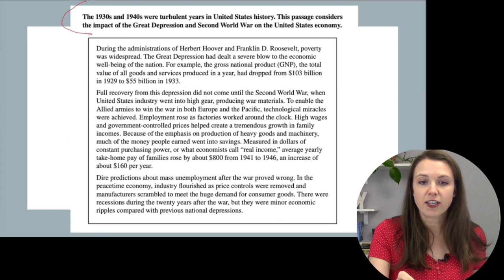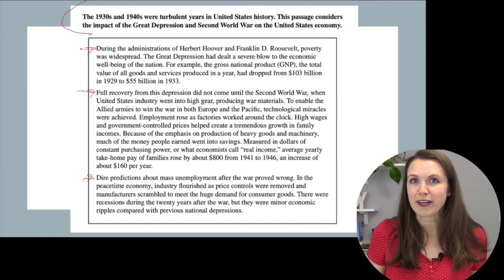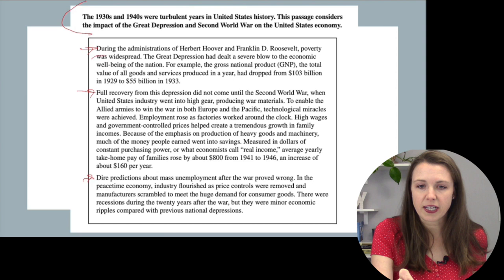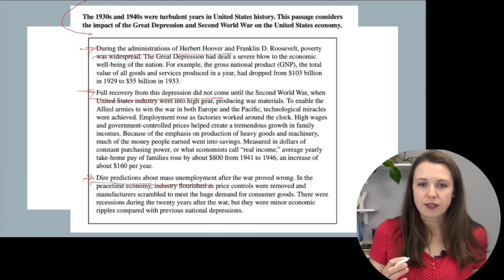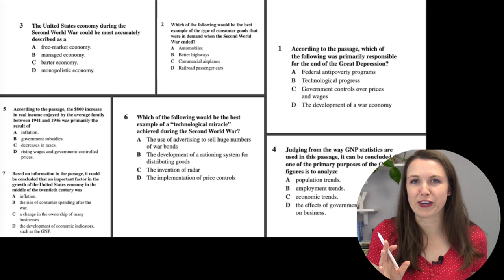Here's our first article. I'm going to survey by reading the first part and just about half a line of each paragraph. The title section says: 'The 1930s and '40s were turbulent years in the United States. This passage considers the impact of the Great Depression and Second World War on the United States economy.' Quickly reading just the first half-line of each paragraph gives us a general idea of what's going on — full recovery from the depression, and dire predictions about mass unemployment.